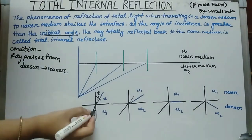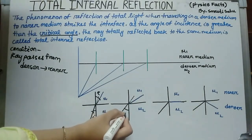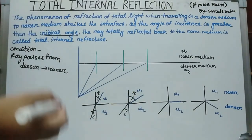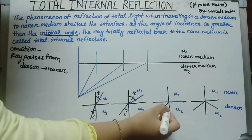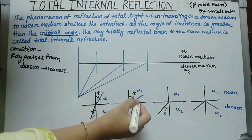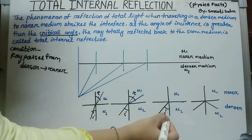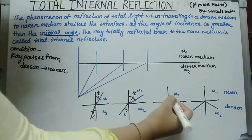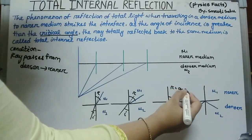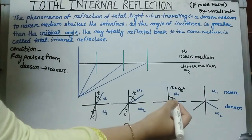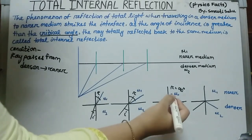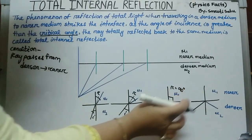As we increase the angle of incidence, the angle of refraction also increases. As we further increase the angle of incidence, the angle of refraction gradually increases. At a certain point, the angle of refraction becomes 90 degrees — the ray is refracted but goes parallel to the interface. So the angle of refraction is 90 degrees.